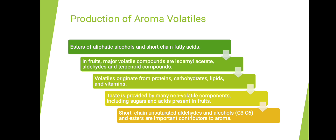Production of aroma volatiles: major compounds are esters of aliphatic alcohols and short-chain fatty acids. In fruits, major volatile compounds include isoamyl acetate, aldehydes, and terpenoid compounds. Volatiles originate from proteins, carbohydrates, lipids, and vitamins. Taste is provided by many non-volatile components including sugars and acids. Short-chain unsaturated aldehydes, alcohols, and esters are important contributors to aroma.